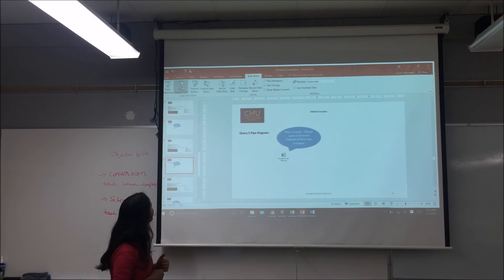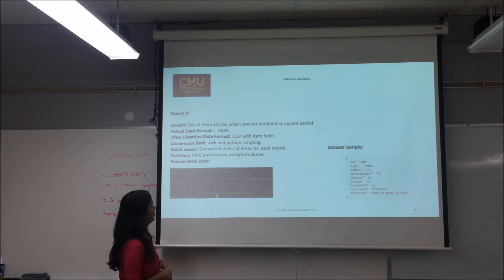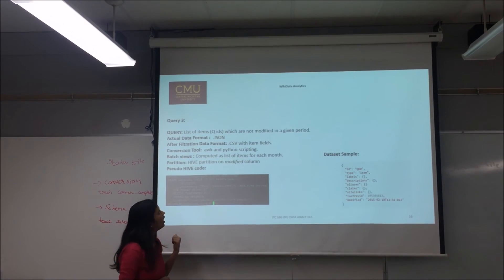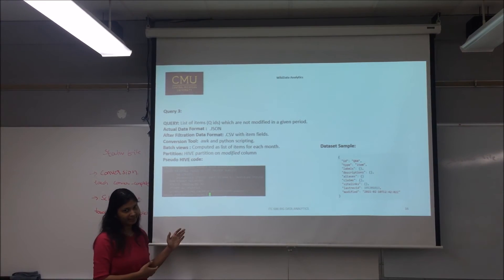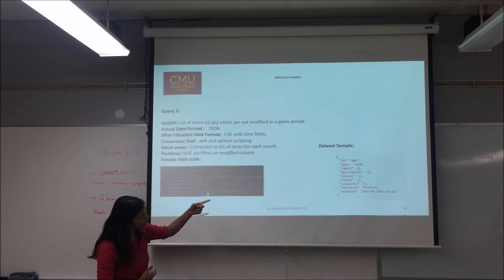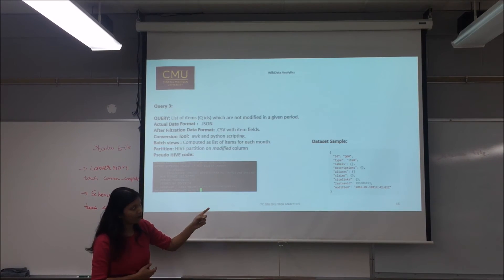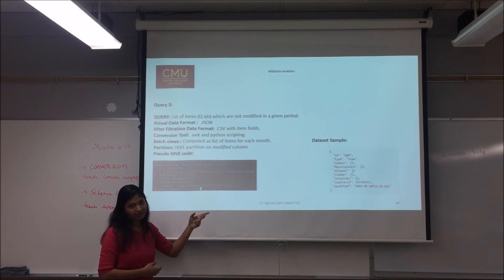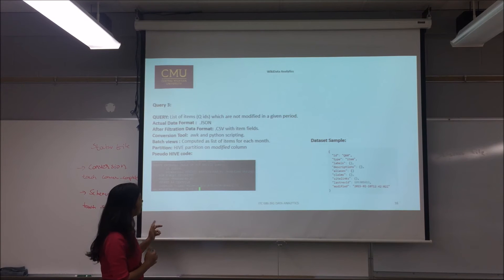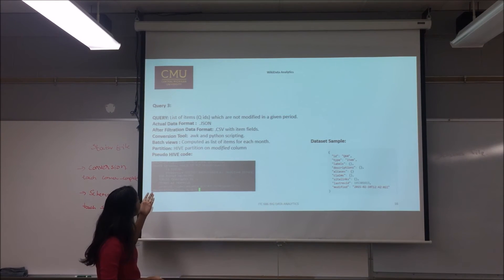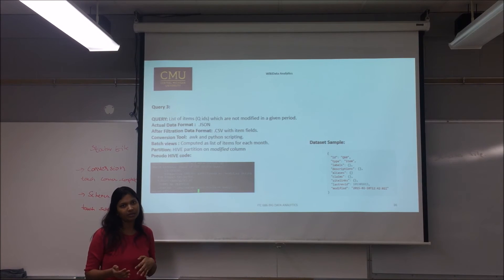The third query deals with the list of QIDs which are not modified in a given period. The data format would be the JSON dump, and after filtration it would be converted into a CSV file having only the item field. In the dataset example, the ID number constitutes the QID, and a tag named 'modified' stores the timestamp. We would filter these two values using awk and Python scripting, store the table, and perform further filtrations. Batch views can also be computed for each month and summed up to give the result.